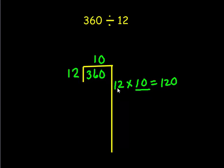And I just wrote that 12 times 10 was 120, so I'm going to subtract that. In my 1s place, I have 0. 6 tens minus 2 tens is 4 tens. 3 hundreds minus 1 hundred is 2 hundreds. So I still have 240 that I'm going to try to put the 12 into.